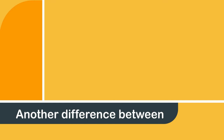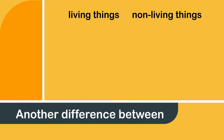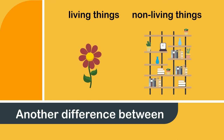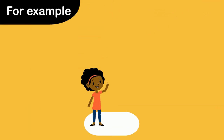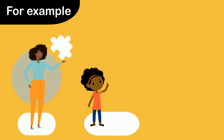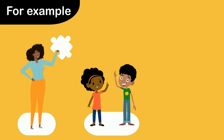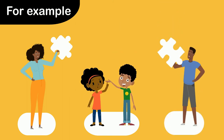Another difference between living things and non-living things is that living things grow, while non-living things stay the same. For example, a baby girl grows up and becomes a woman, and a baby boy grows up and becomes a man.